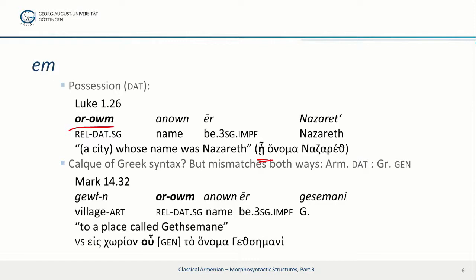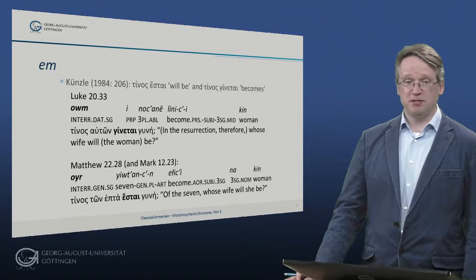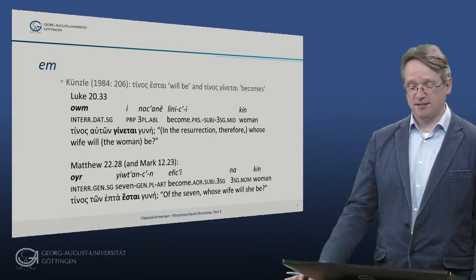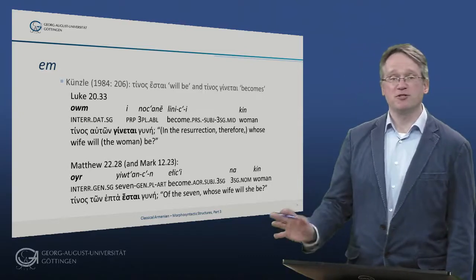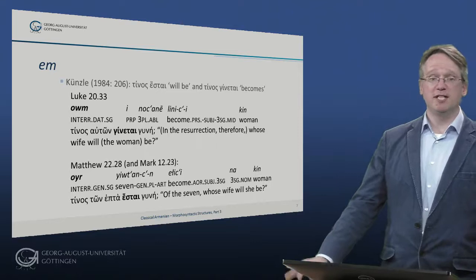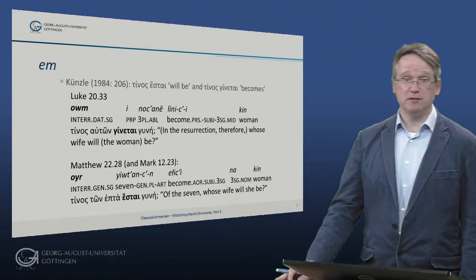This is Mark 14: 'Gyurun vorum anun er Gethsemanii' — a place called Gethsemane. In the Greek we have a genitive, while the Armenian has a dative. Künstler in 1984 points out the difference in translations of the Greek 'tenos estai' (will be) and 'tenos genetai' (becomes), with the genitive and the dative respectively in parallel passages.